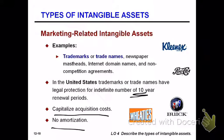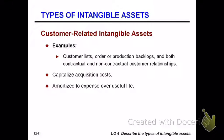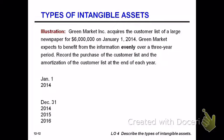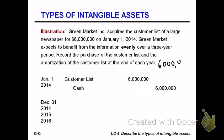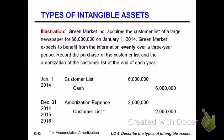For marketing-related intangibles, you capitalize acquisition costs and any legal costs from disputes that you've won. Customer-related intangibles include customer lists, backlogs, and contractual and non-contractual customer relationships. You capitalize the acquisition cost and amortize them over the useful life. If they're internally generated, there would be nothing to record. For example, Green Market buys a customer list for $6 million — recorded as an intangible with cash credited. It's amortized straight-line over three years, so $2 million per year.